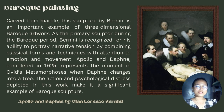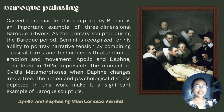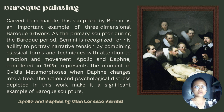The second example is Apollo and Daphne by Gian Lorenzo Bernini. Carved from marble, this sculpture by Bernini is an important example of three-dimensional baroque artwork. As the primary sculptor during the baroque period, Bernini is recognized for his ability to portray narrative tension by combining classical forms and techniques with attention to emotions and movement. Apollo and Daphne, completed in 1625, represents the moment in Ovid's Metamorphosis when Daphne changes into a tree.